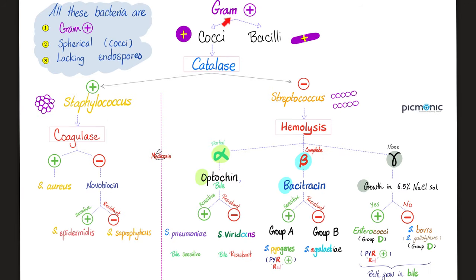Gram-positive cocci are catalase positive — including Staph — or catalase negative — which are Strep. Then we have three Staph species: Staph aureus, Staph epidermidis, and Staph saprophyticus.